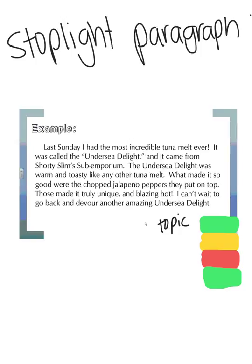...what am I mostly writing about? 'Last Sunday I had the most incredible tuna melt ever.' So I'm going to go ahead and highlight this green. This topic sentence tells me that this entire paragraph is going to be about tuna melts. The next part of the stoplight paragraph is yellow — yellow represents our examples or details.